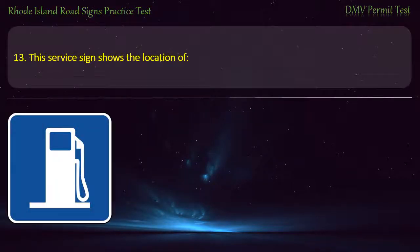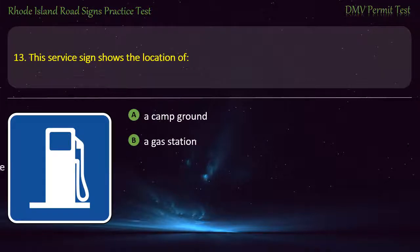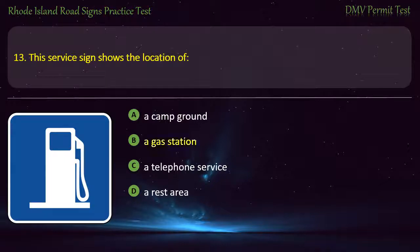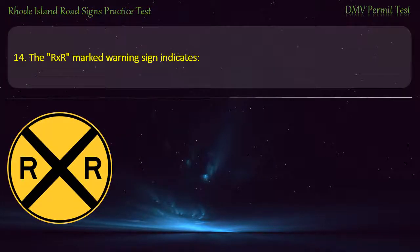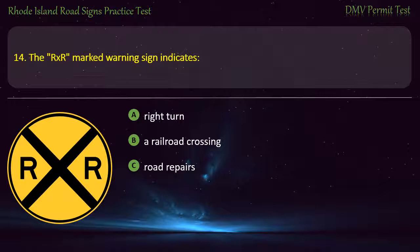Question 13. This service sign shows the location of: a campground, a gas station, a telephone service, a rest area. Answer: A gas station. Question 14. The RXR marked warning sign indicates: right turn, a railroad crossing, road repairs, road work. Answer: A railroad crossing.